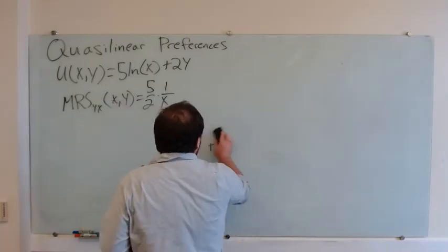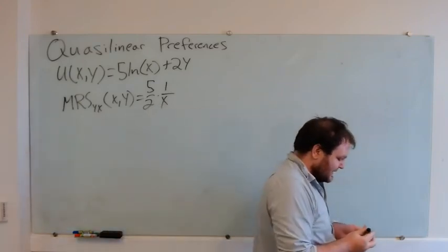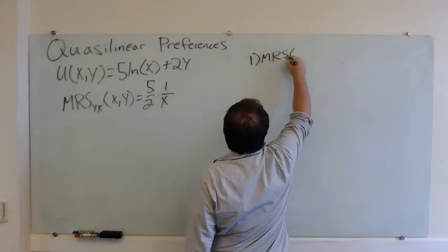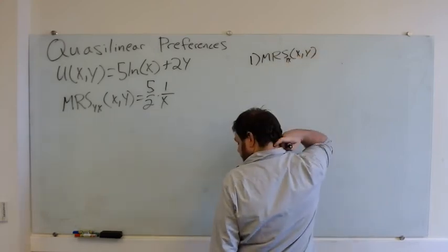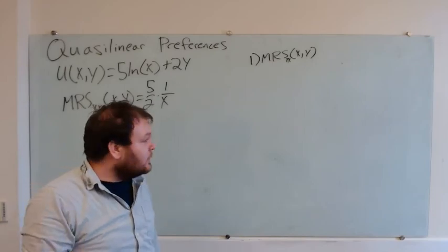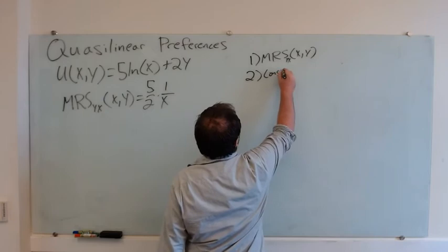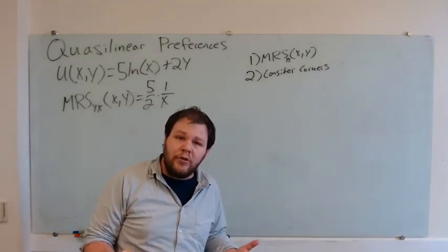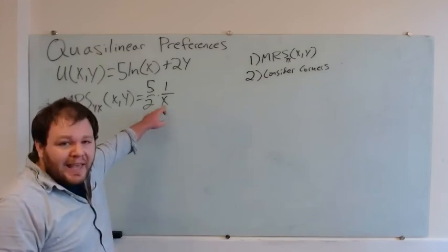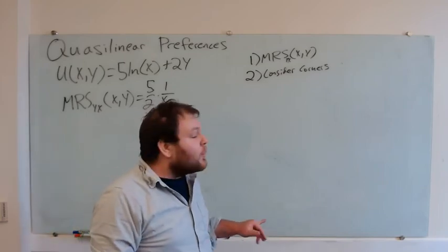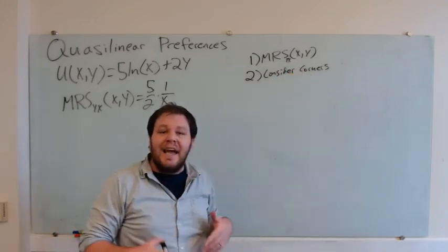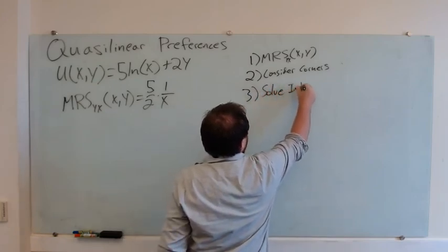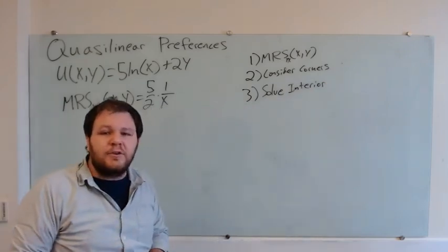More broadly, how do we use our quasi-linear example to come up with a procedure for solving optimization problems? First, we find our MRS — we have to do that regardless of whether we're trying to solve for a corner or interior solution. The second thing is to consider our corners. If you've got a situation like Cobb-Douglas where you can rule out one or both corners, then you can consider the corners dealt with. Otherwise, plug in your corner solutions to the MRS and see whether corner solutions are satisfied. Once you've done that, then you can solve for an interior solution, satisfied that your solution is not going to be at the corners.